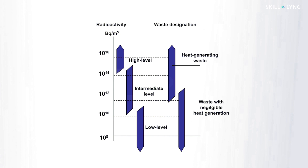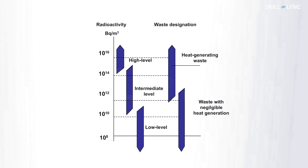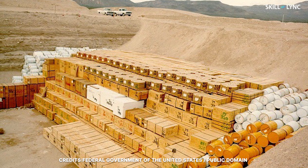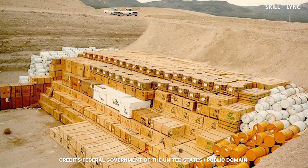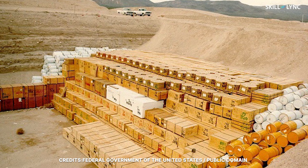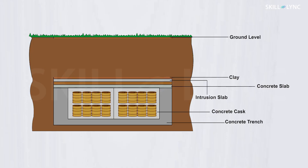Low-level waste, as the name suggests, has very low radioactivity. For example, the reactor water comes in contact with the nuclear fuel, thus the waste from reprocessing of water is contaminated and comes under low-level waste. Such waste can be stored in pits and does not require shielding while handling. Intermediate-level waste needs shielding because it has a higher level of radioactivity, but not high enough to require cooling as well.